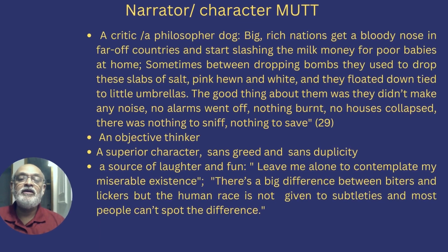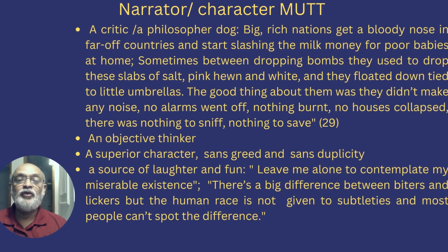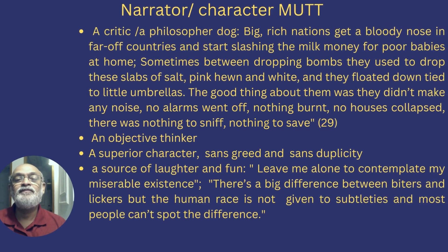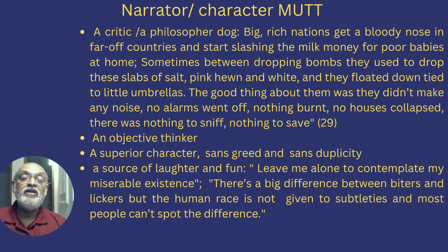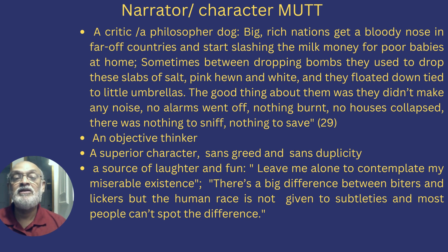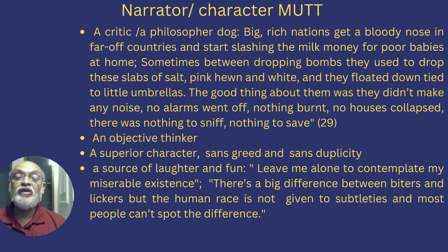A few words about the character of Mutt. He is undoubtedly the principal narrator in the novel, and what a great creation he is. He is a critic, a philosopher, an objective thinker, a superior character because he is free from both greed and duplicity, and above all, a rich source of laughter and humor in the text. The slide contains a few textual examples, so please read the examples to have an idea of his objective thinking as well as his ability to excite laughter and fun in the text.